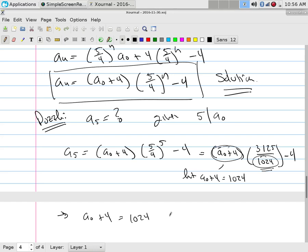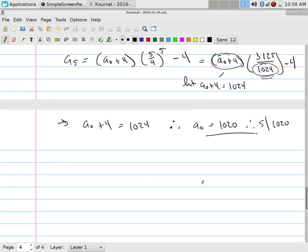If I say a_0 plus 4 is equal to 1024, that tells us that a_0 was 1020, and 5 divides 1020, so yay that works. But better yet, what's a_5? Those simply cancel - it's 3125 minus 4, which is 3121, and we're done.